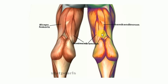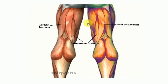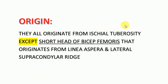This is the semitendinosus muscle, this is the semimembranosus muscle, and this is the biceps femoris. They are forming the posterior compartment of the thigh. Regarding their origin, they all originate from the ischial tuberosity, except the short head of the biceps femoris.